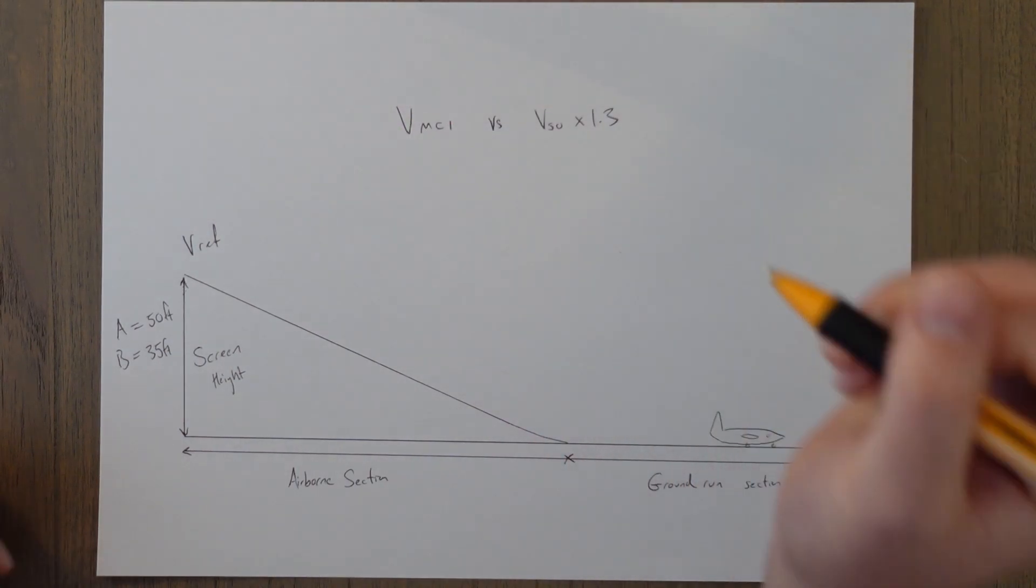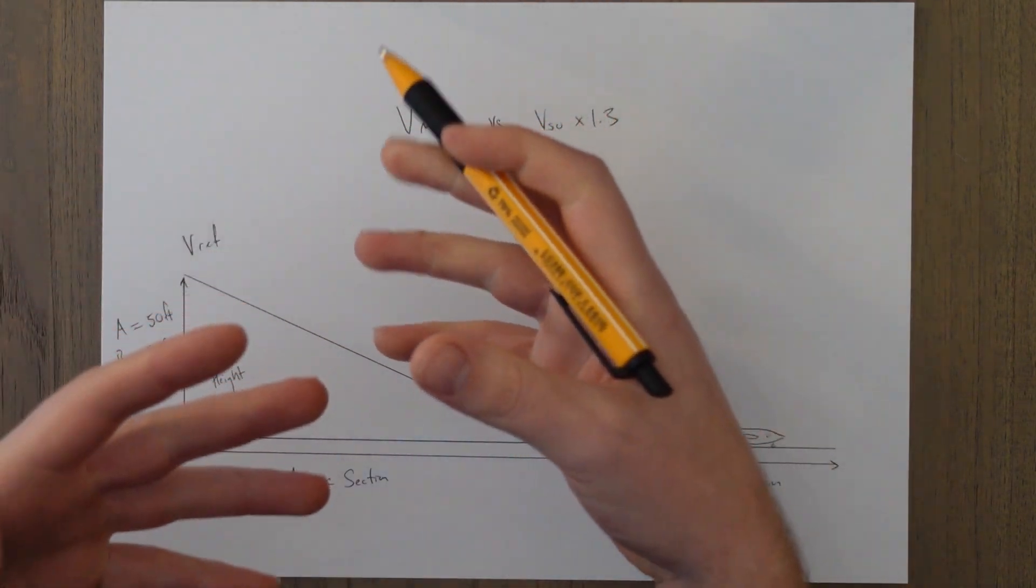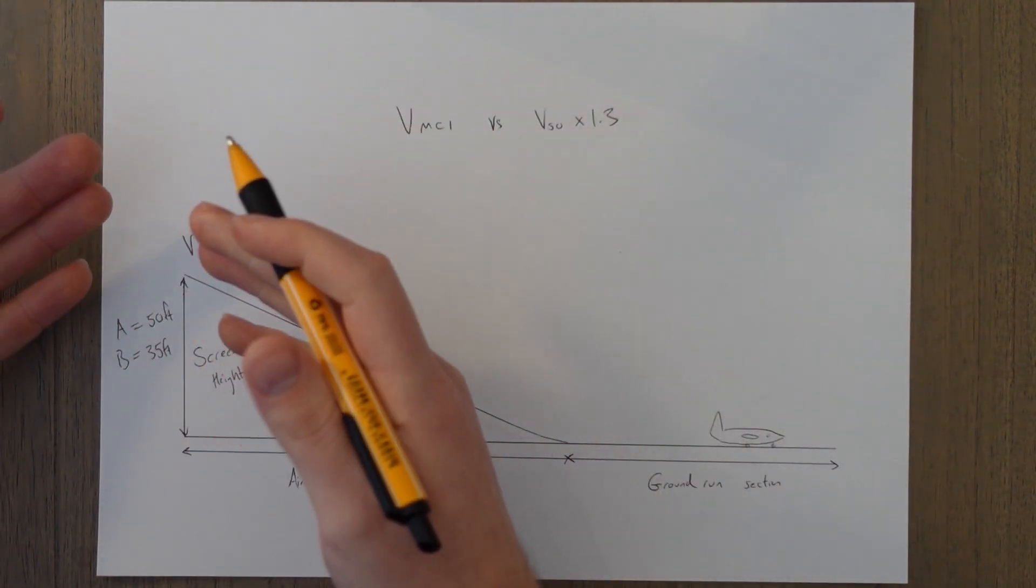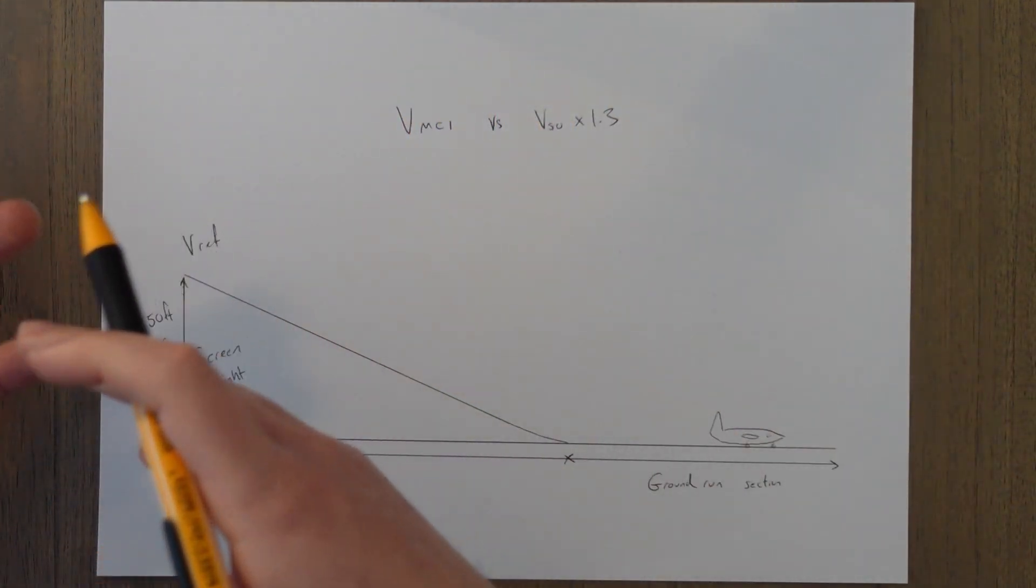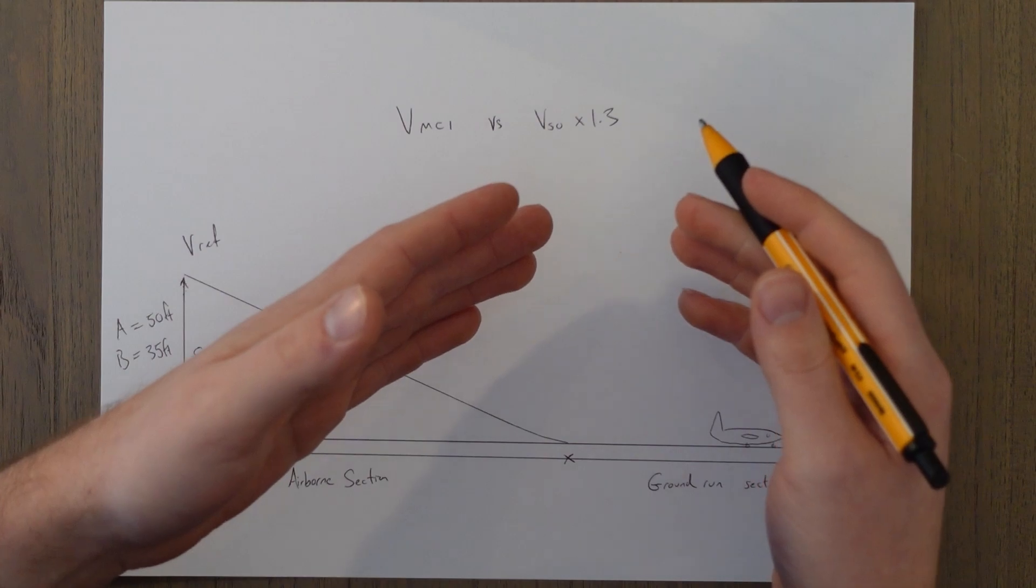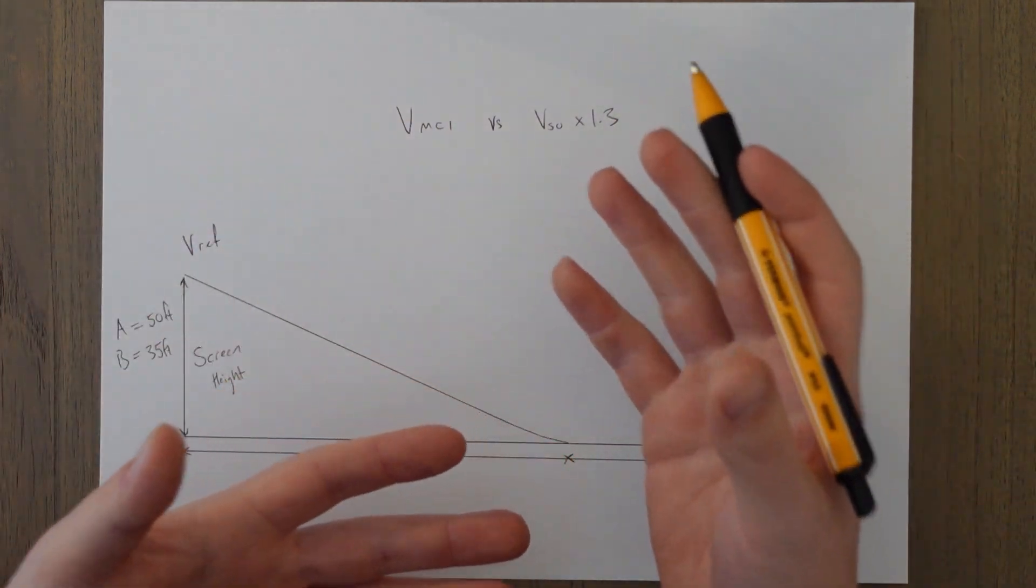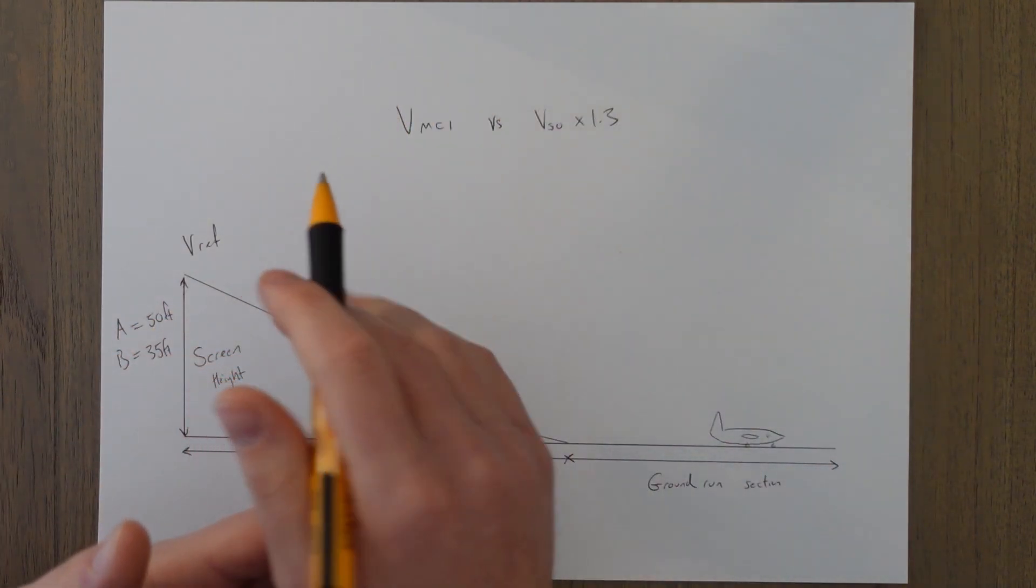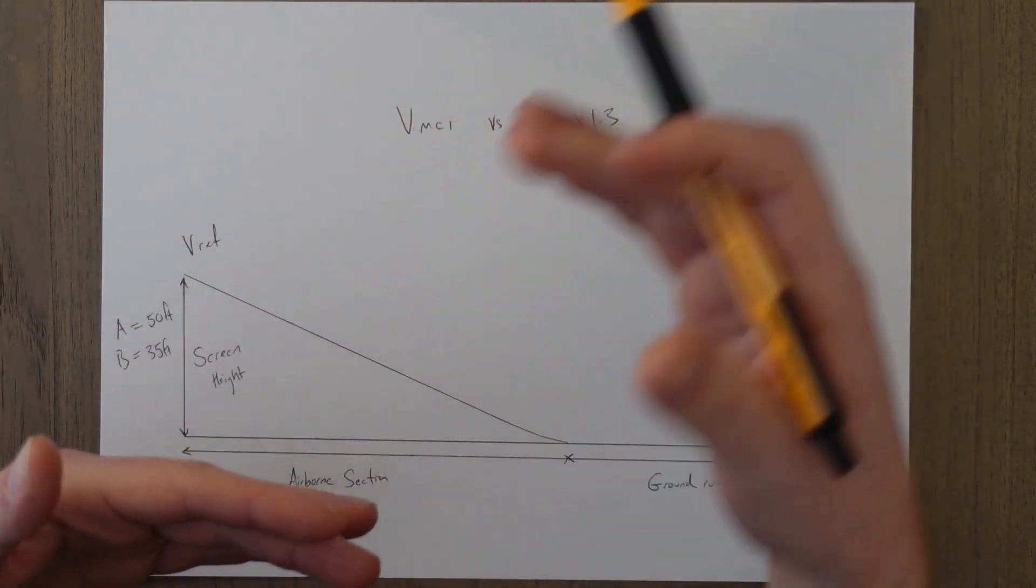So it's this versus this and VMCL if you're not familiar is basically a safe enough speed to fly at so that if we go around there's enough flow over the aerodynamic surfaces to maintain control of the aircraft. And the stall speed in the landing configuration is obviously going to keep us above the stall speed in the landing configuration and we chuck on 1.3 as a safety factor just to make sure we're flying fast enough.